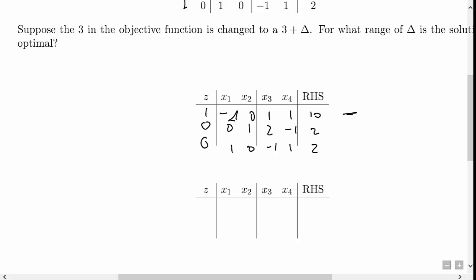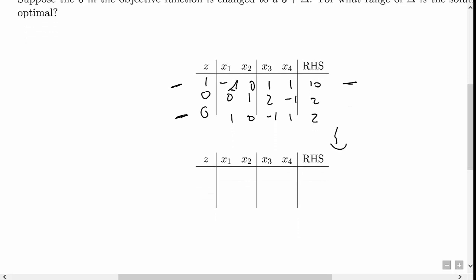So in order to do that, I'm going to add delta times row 2 to row 0. When I do that, row 0 looks like 1, and then I'm adding delta times row 2 to row 0. So I get a 0 here, I get a 0 here, I get a 1. I'm adding delta times row 0 here, so I get a 1 minus delta here, and I get a 1 plus delta here. And on the right-hand side, I get a 10 plus 2 delta. Then the rest of the table is the same.